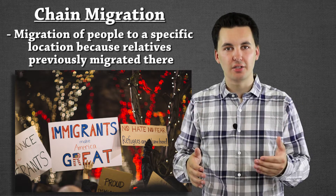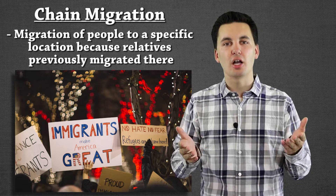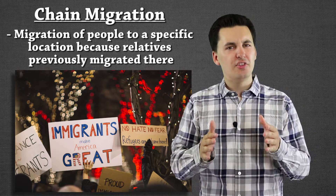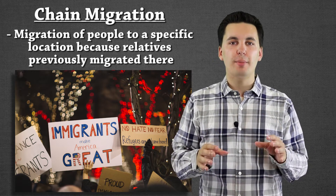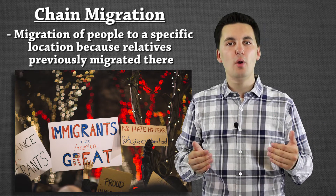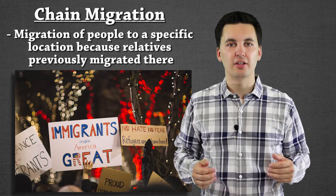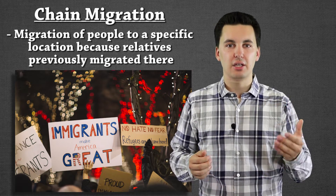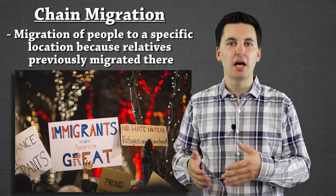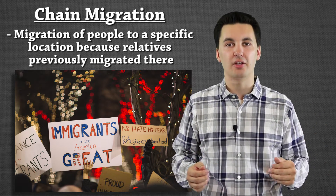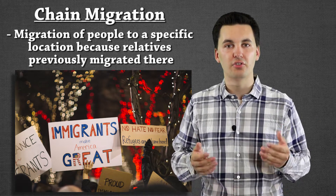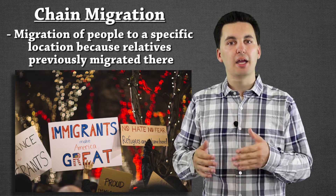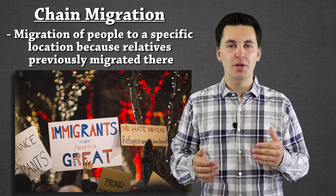Since we're talking about remittances, we should talk about chain migration — which has been in the news a lot. Chain migration is part of the family reunification process. If you have a family member who moved to a new country, say someone came from Mexico and now lives in the United States, they can apply to co-sponsor a brother back home to get them a green card or access into the country. I apply to get my brother to come over, he applies to get his wife to come over — that is the chain migration process.